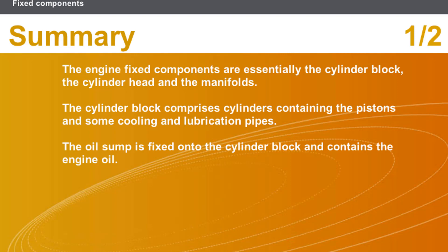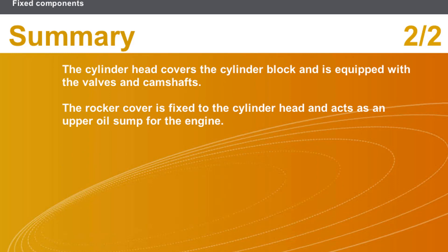On some engines the rocker cover assists in positioning the camshaft. In summary, the engine fixed components are essentially the covers, the cylinder head, and the manifolds. The cylinder block comprises cylinders containing the pistons and some cooling and lubrication pipes. The oil sump is fixed onto the cylinder block and contains the engine oil. The cylinder head covers the cylinder block and is equipped with the valves and camshafts. The rocker cover is fixed to the cylinder head and fulfills the function of an upper oil sump for the engine.